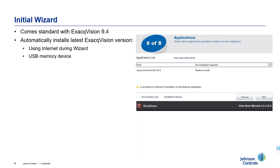Before you panic about version 9.4 versus version 20 — they're not that far apart. Exacq recently changed the way they name versions, now going by year. So 9.4 is approximately from 2019, whereas version 20 is from 2020 — only a few months difference. And again, it auto-updates for you.